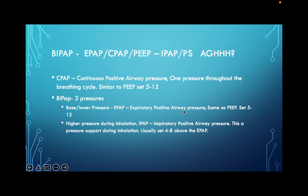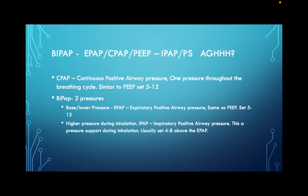So CPAP: one pressure, helps with hypoxia and sleep apnea. Now BiPAP: two pressures. The base or lower pressure is called EPAP - expiratory positive airway pressure - think of it as PEEP with the letters unscrambled. Then above your EPAP is IPAP - inspiratory positive airway pressure. When the patient breathes in, the machine boosts pressure from EPAP up to IPAP. The difference between EPAP and IPAP is the same as pressure support on a ventilator.